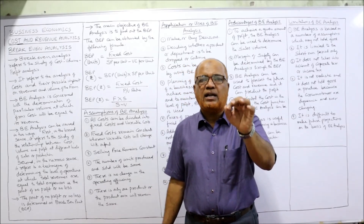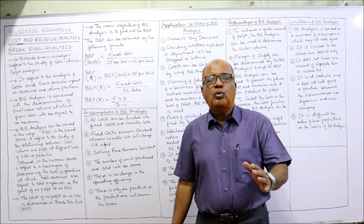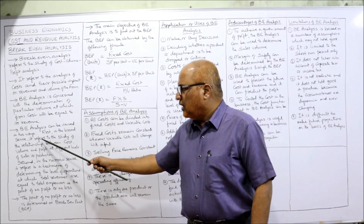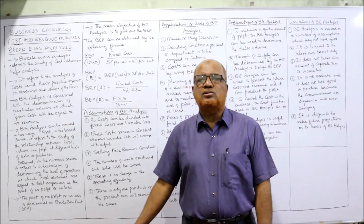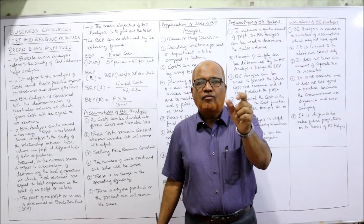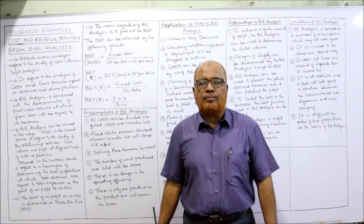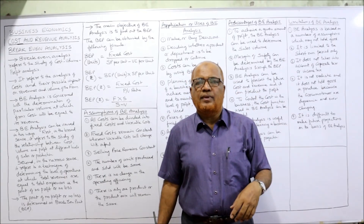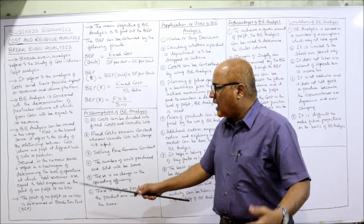When cost is equal to revenue, there is no profit at all. By applying break-even analysis we find the level at which there is no profit, no loss. Break-even analysis can be viewed in two ways. In the broader meaning, it refers to the study of the relationship of cost, volume, and profit at different levels of sales or production.